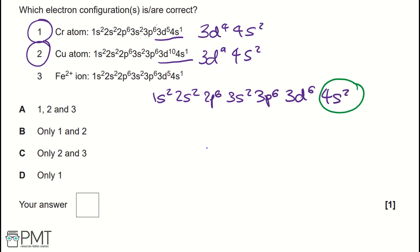Therefore, 3 is not correct and our answer is only 1 and 2, which is B. So to get the mark for this question, we need to write B in the answer box provided.